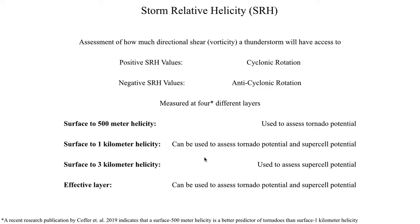The effective inflow layer is the depth of the atmosphere where the thunderstorm can receive its fuel supply. Ideally you want a very deep effective inflow layer for widespread thunderstorm development — if it's very shallow, you might not get any thunderstorms forming at all. This can also be used to assess tornado and supercell potential, but per the recent research publication, surface to 500 meter helicity is a much better metric to assess tornado potential.